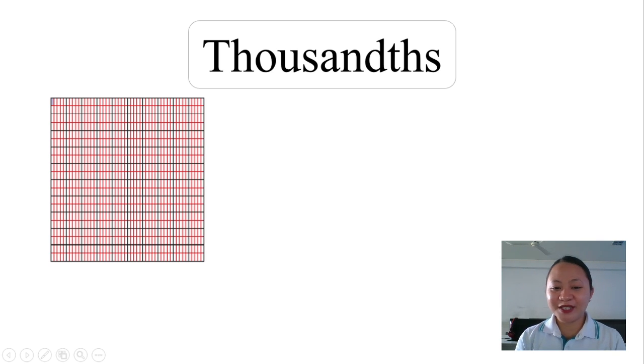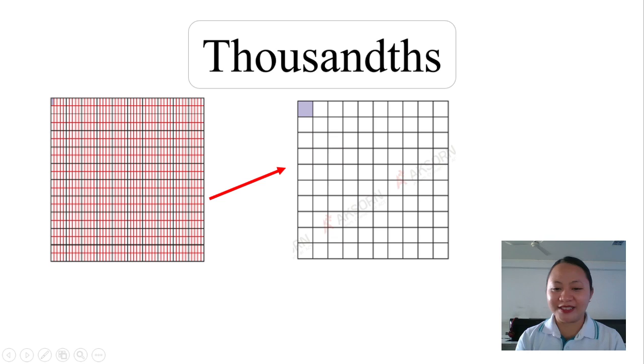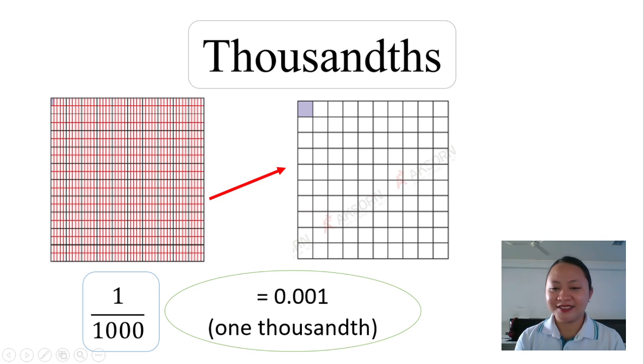This figure comes from a hundredth part that is divided into ten to make it one thousand equal parts. This is one over one thousand, or 0.001. We read it as one thousandth.